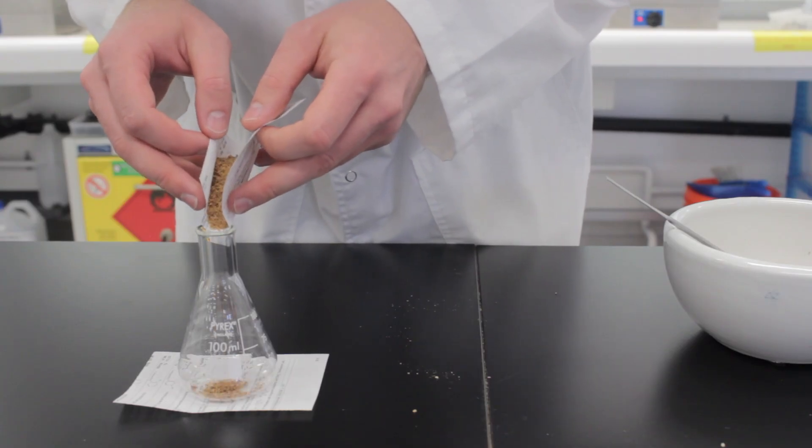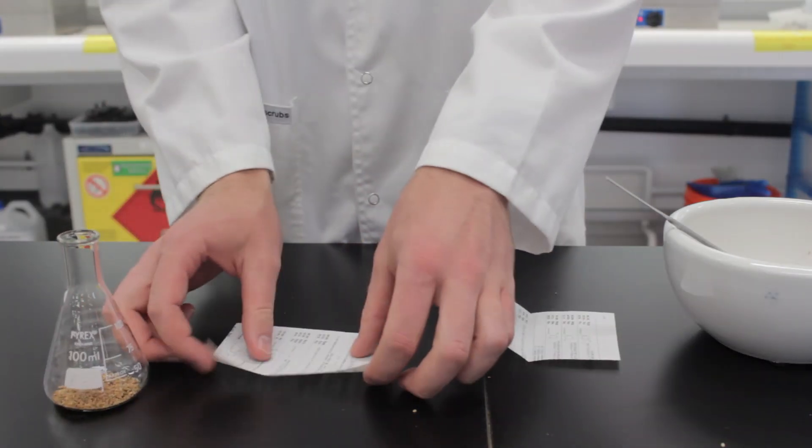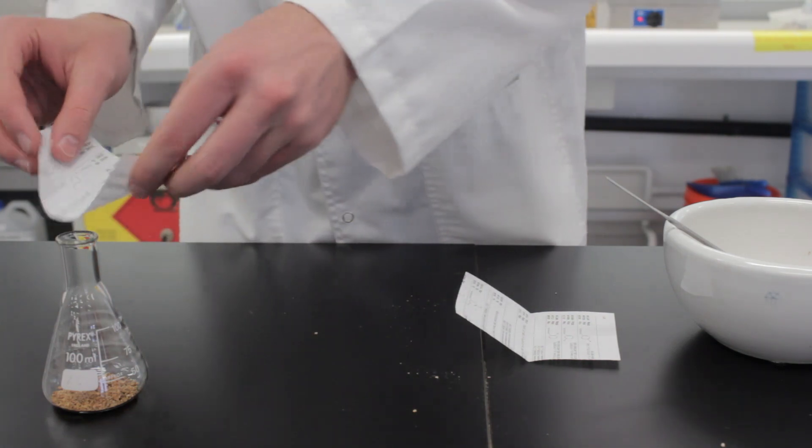Hot tip, put another weighing paper under your flask to catch any fallout and then use that to funnel it back in.